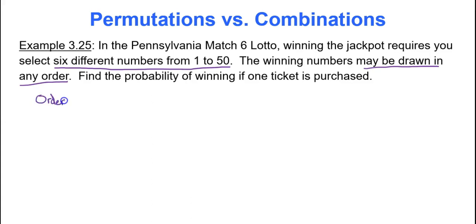So in this situation, because the numbers can be drawn in any order, so if 1, 2, 3, 4, 5, and 6 are the winning numbers, it doesn't matter what order they're in. As long as you have 1, 2, 3, 4, 5, and 6 as the numbers you selected, you're good. So order does not matter, which means this is a combination. So how many numbers can we pick from? Well, 50. 1 to 50 is 50 numbers total. How many numbers are we choosing? 6. So your one and only job is to calculate 50, choose 6. It's a combination. It says order doesn't matter. The winning numbers may be drawn in any order. So 50, choose 6.